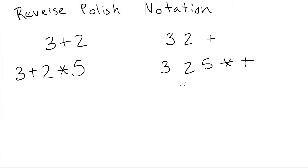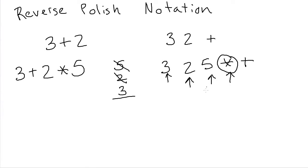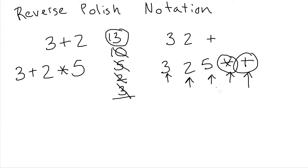The way that Reverse Polish Notation works is with a stack. Every time you see a number, you push it onto the stack. So we see three, push it; we see two, push it; we see five, push it. Then when we see an operator, we pop two things off the stack — we pop off the five and the two — then apply the operator. So two times five is 10, and we push the answer back on the stack. When you see a number, you push; when you see an operator, you pop off two things, apply the operator, and put the result back on the stack. So after doing the times, we have 10 and three on the stack. We see the plus, pop off the 10 and the three, apply the operator to get 13, and push the answer back on. At the end, we have only one thing on the stack — the 13 — which is the answer.